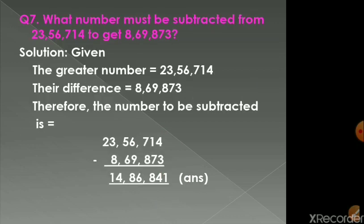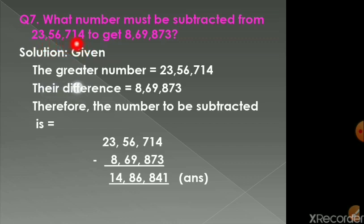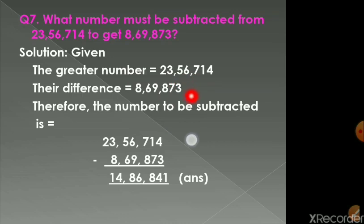Next, question number 7. What number must be subtracted from 23,56,714 to get 8,69,873? The number which is subtracted is the smaller number, so the number we have to find is smaller. The greater number is 23,56,714, and the difference is 8,69,873. Therefore, we need to find the number to be subtracted.